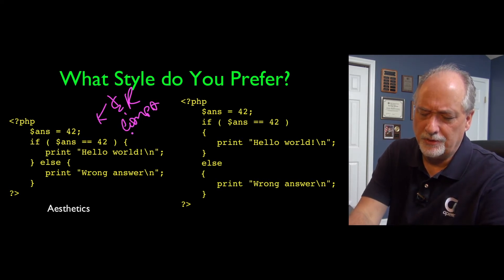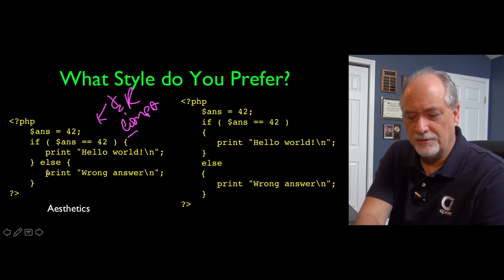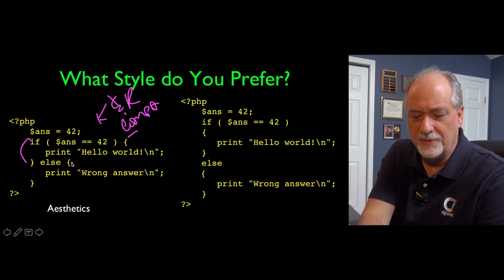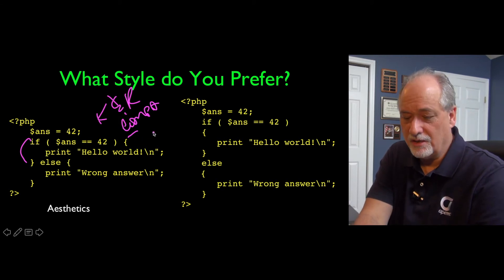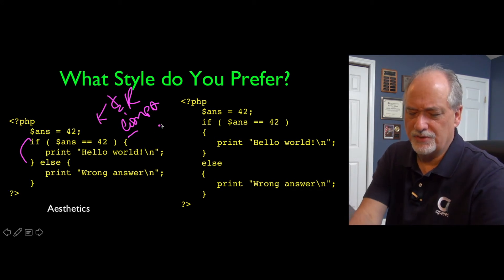KNR is more compact. We put the starting brace on the same line as the if, and then we put the ending brace to line up with the if, and then we put the new starting brace on top of the else. This is good if you were typing cards, or if you had a really tiny terminal.